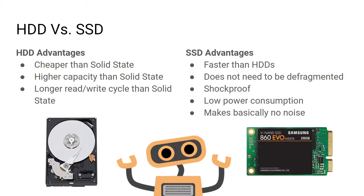It's common to be asked to compare magnetic and solid state storage — specifically hard disk drives and solid state drives. Hard disk drives are cheaper, have a higher capacity, and have a longer read-write cycle. Advantages of solid state drives include that they are faster, don't need defragmentation, are shockproof, have lower power consumption, and make no noise. This makes them ideal for portable devices such as laptops and tablets.